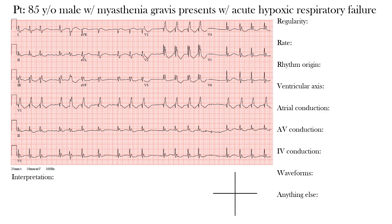Our 85-year-old male with a history of myasthenia gravis presents with acute hypoxic respiratory failure. Let's go through the EKG. First, we look at the regularity of the rhythm. On first impression, the rhythm appears irregular — not only irregular but irregularly irregular.